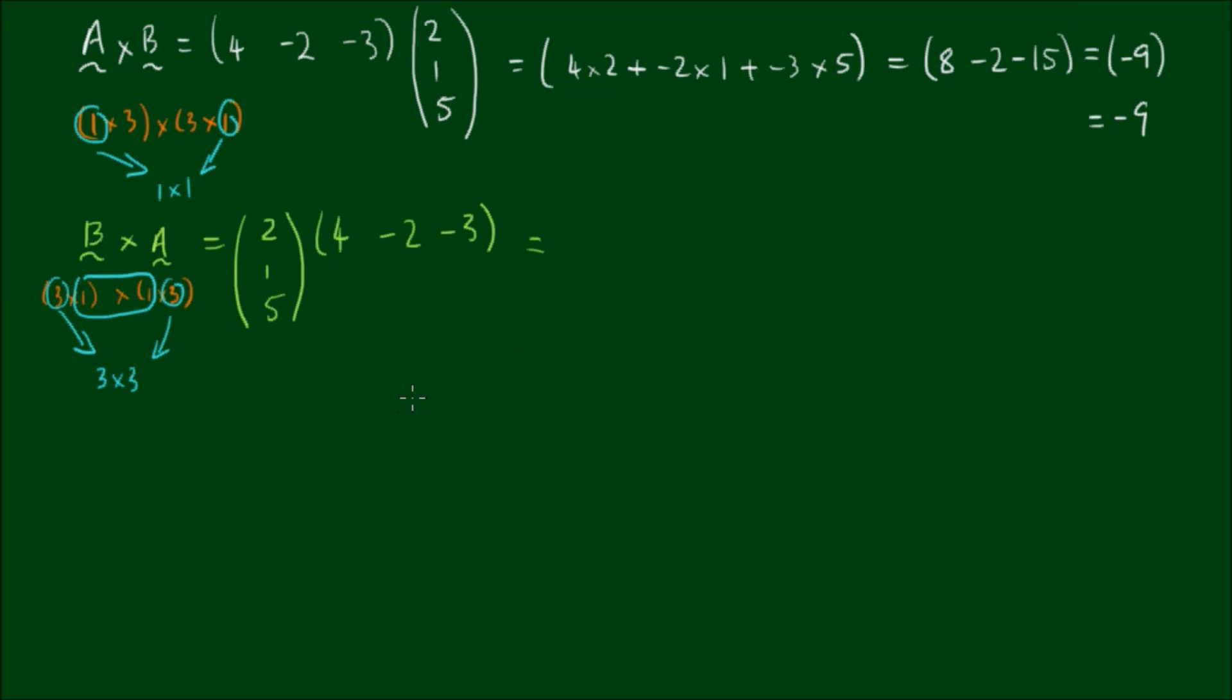The operation is still the dot product between the rows and the columns. So we have row by column, 2 by 4, row by column, 2 by negative 2, 2 by negative 3, 1 by 4, 1 by negative 2, 1 by negative 3, and etc. And so this is the resultant matrix and let's call this matrix C.